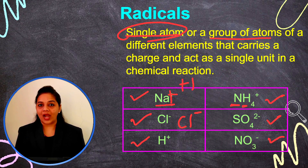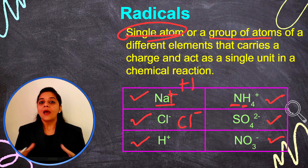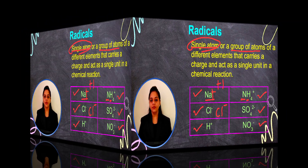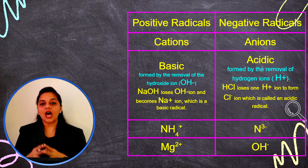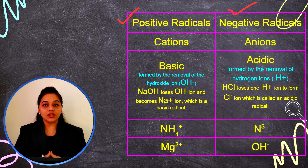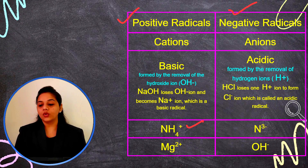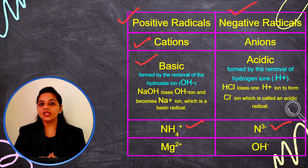Let's see the different types of radicals. Depending on the charge, radicals are of two types: positive radicals and negative radicals. If the charge is positive, they are known as positive radicals, and if the charge is negative, they are known as negative radicals. Positive radicals are also known as cations and basic radicals, and negative radicals are also known as anions and acidic radicals.